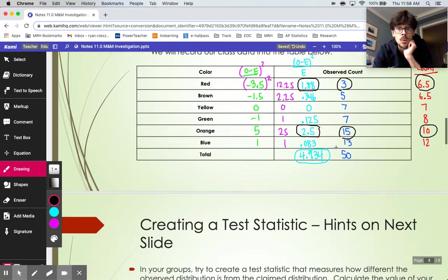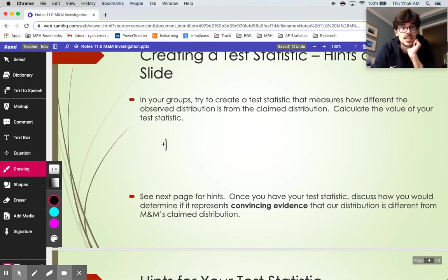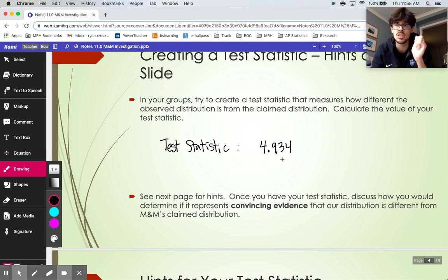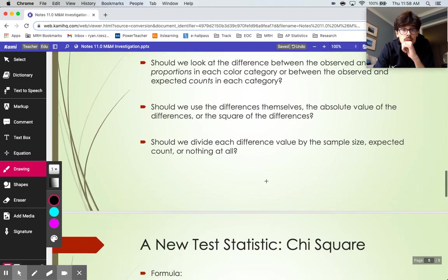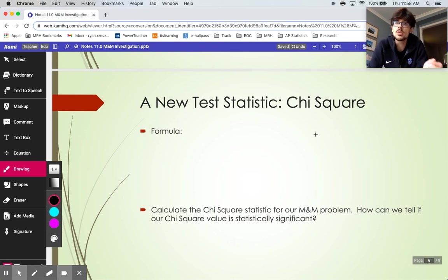So that 4.934 is called the test statistic for our problem. And I will summarize this process in this video and the next one. Probably I'll save that till the next video here. But we got this accumulated total that somehow represents how far off we were. This test statistic that we calculated is actually something brand new for us here. It is called a chi-square test statistic.